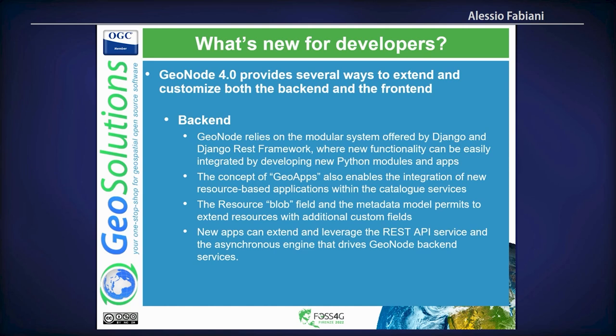On the back-end side, we extended the resource models and job models to let you put all the things you want. You have blob areas where you can put your JSON schema to adapt the model of your resources to your needs and applications. The REST API will be able to use those custom schemas and custom fields and return them through the REST API. Our effort was to make Geonode as flexible as possible compared to version 3.